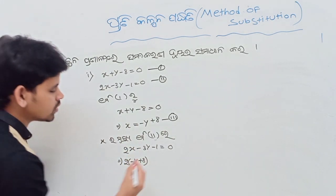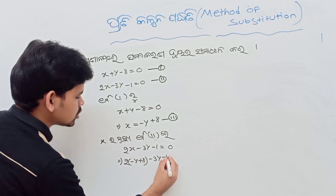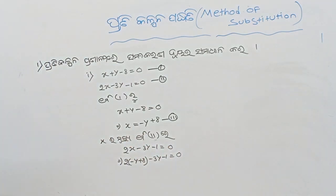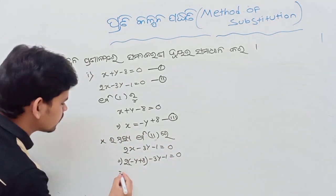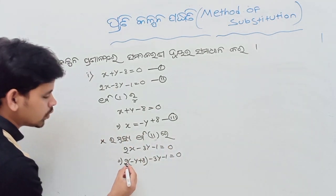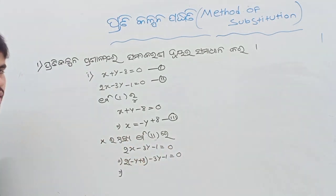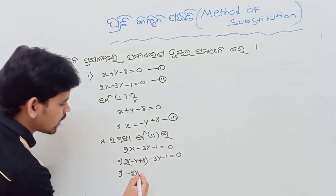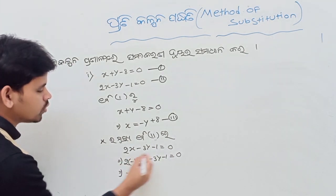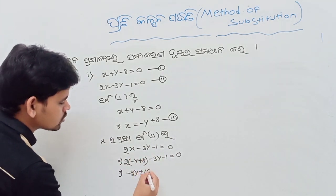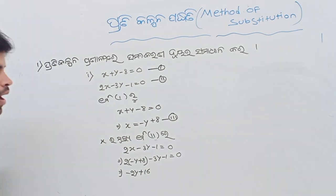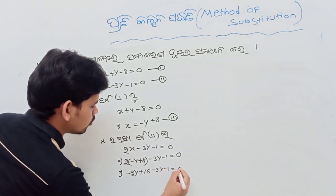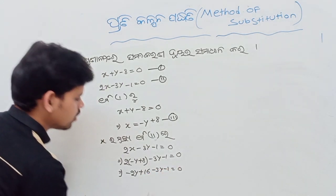For the return, give me minus y plus 8. Tap it — minus 3y minus 1 equal to 0. So next, 2 into minus y is minus 2y. Plus — so next minus 3y minus 1 equal to 0.